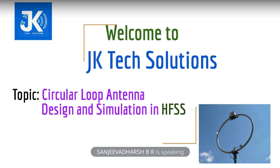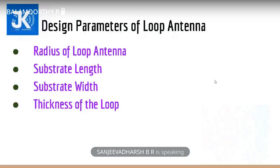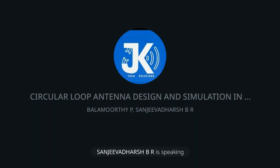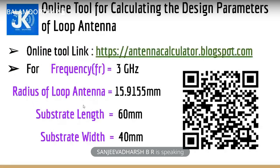In this video, we are going to design a circular loop antenna, as you can see in the image here. The design parameters include radius of loop, substrate length, substrate width, and thickness of the loop. I have already calculated these for a frequency of 3 GHz: the radius of the loop is 15.915 mm, substrate length is 60 mm, and substrate width is 40 mm. The online tool link is provided in the description box and comment section.